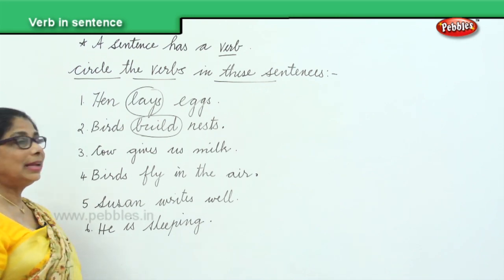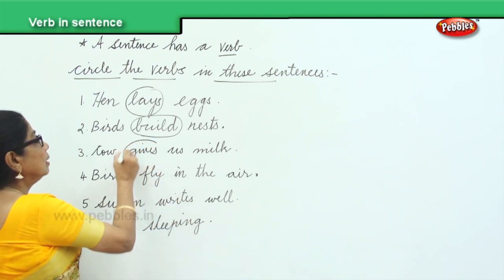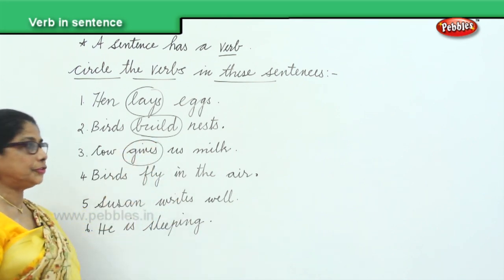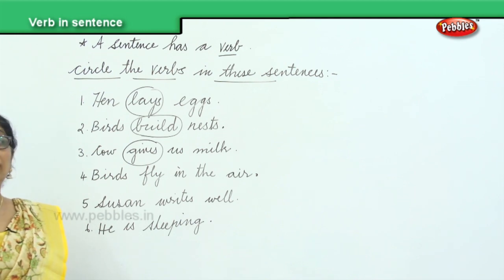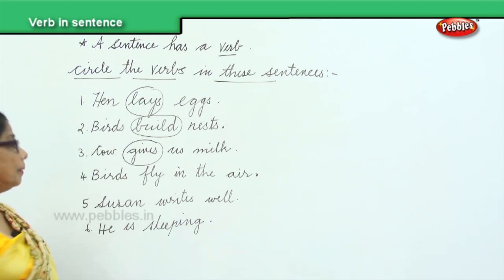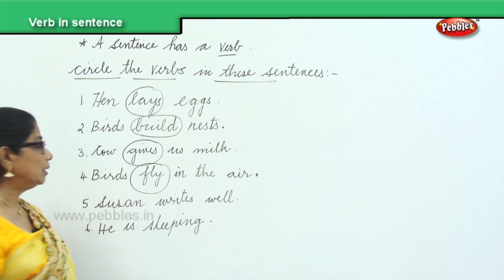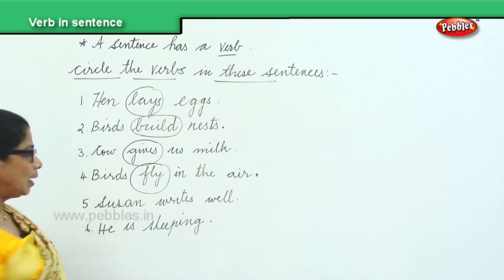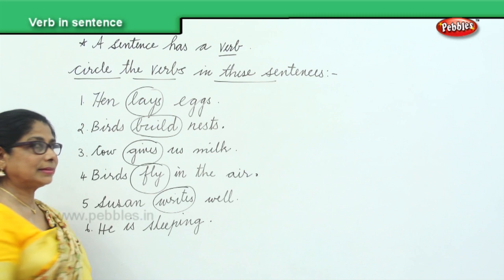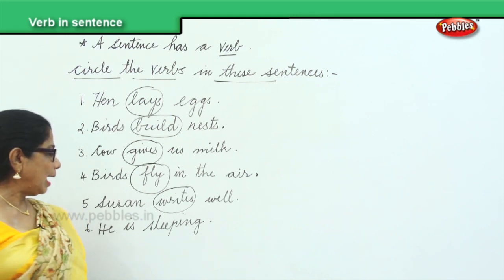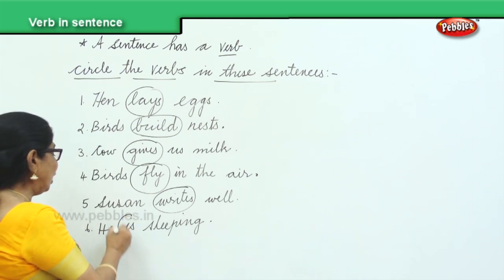Cow gives us milk. What does the cow give? Milk — gives. Birds fly. What flies? Birds fly in the sky. Susan writes well. What does she do? She writes. And what is he doing? He is sleeping.